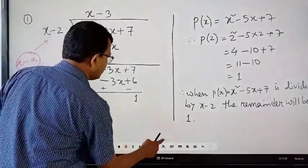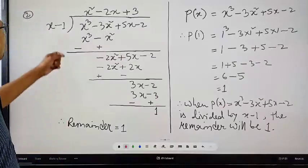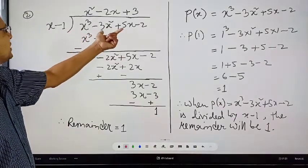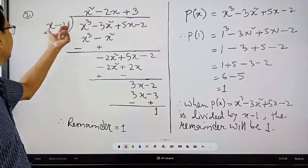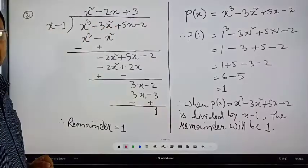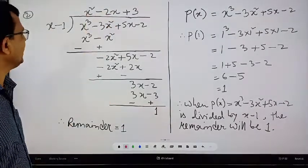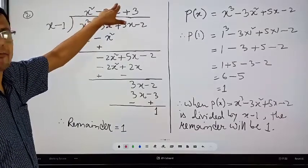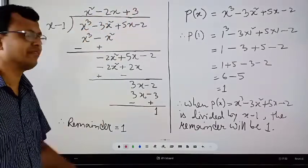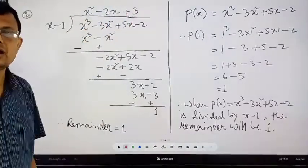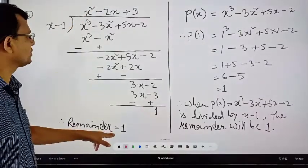Let us see one more example. Consider x cubed minus 3x squared plus 5x minus 2. If this is divided by x minus 1, the quotient is x squared minus 2x plus 3 and the remainder is 1.